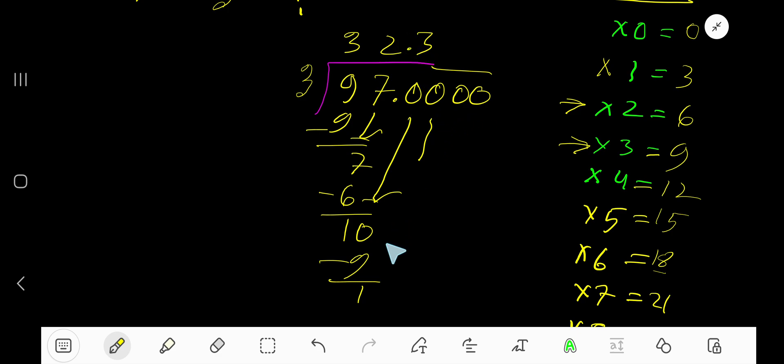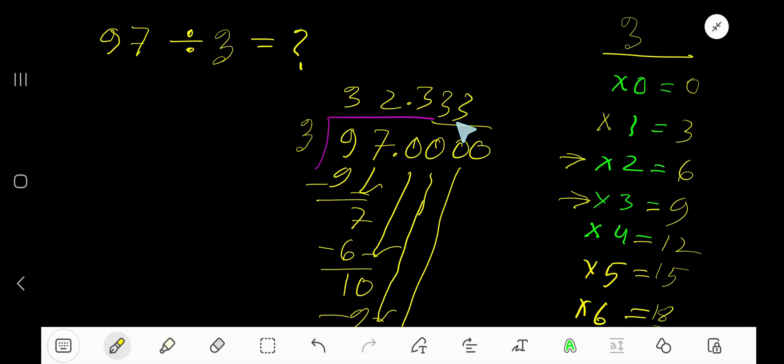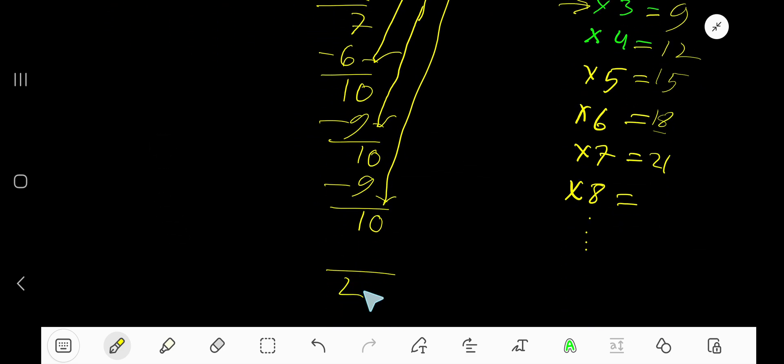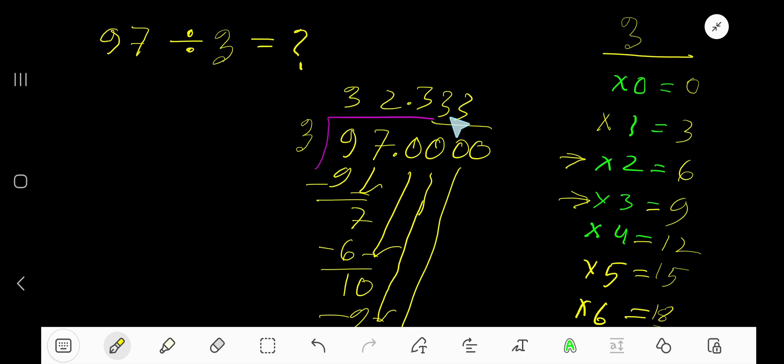3 goes into this 10 again 3 times. 3 times 3 is 9, subtract to get 1. Bring down the next digit, making 10 again. 3 goes into 10 three times, so 3 times 3 is 9, subtract to get 1 again. You can bring down more zeros, but since we have gotten 3 digits after the decimal now.